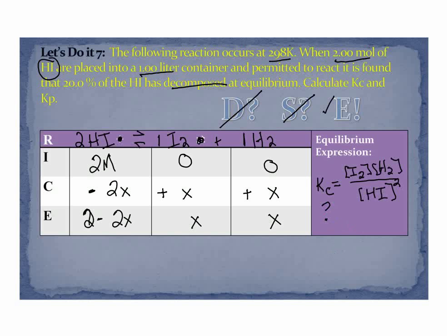Now this is my unknown. I need to know all of my values from the E row in order to calculate it. So there has to be some information for finding that x. And that information is right here in this statement. It says that 20% of the HI decomposed. So if I started with 2 molar, I'm losing 20% of that. So 20% equals 0.40 molar is my loss. That's how much decomposed, not how much remained. You have to be very careful with those words. So that means that minus 0.40 equals 2x is the loss. x therefore has to equal 0.20.